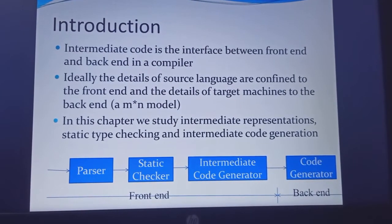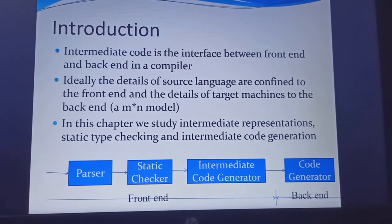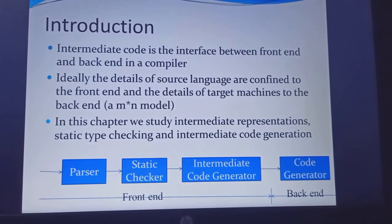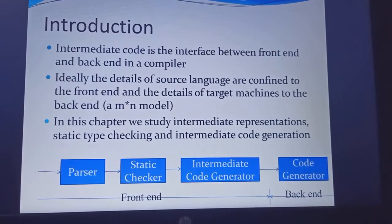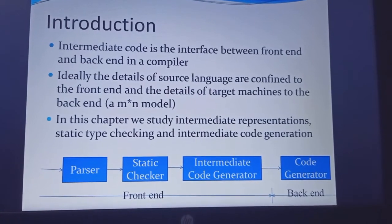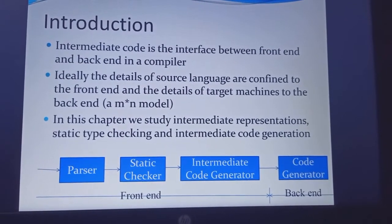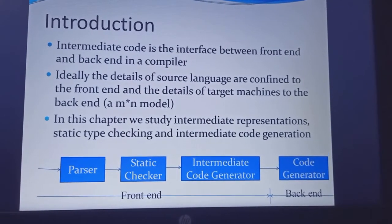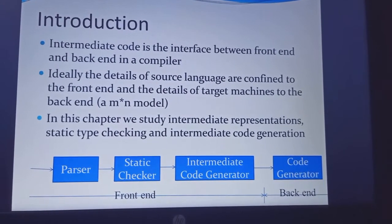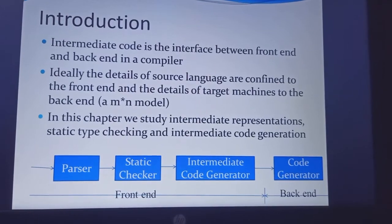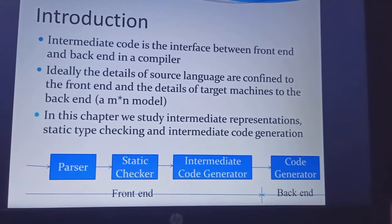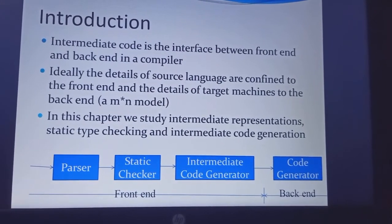The position of the intermediate code generator in the compiler: first, the lexical analyzer generates lexemes or tokens, which are given to the parser. The parser constructs a parse tree, which is passed to semantic analysis where type checking is performed. Then an abstract syntax tree with semantic meaning is constructed and given to the intermediate code generator.